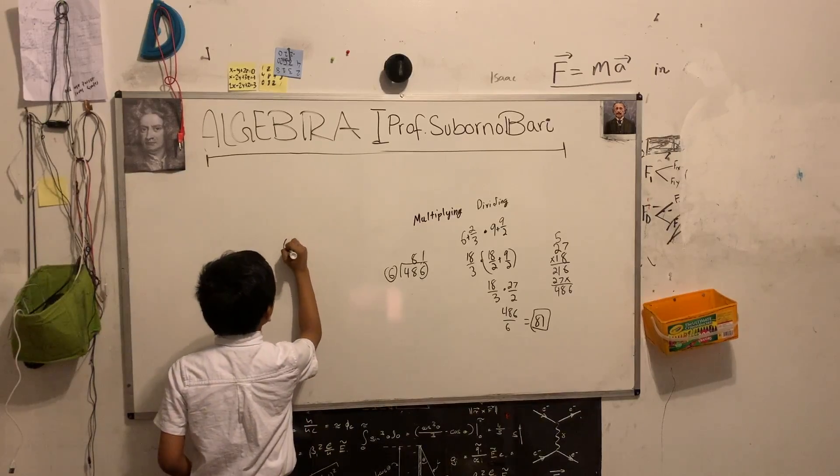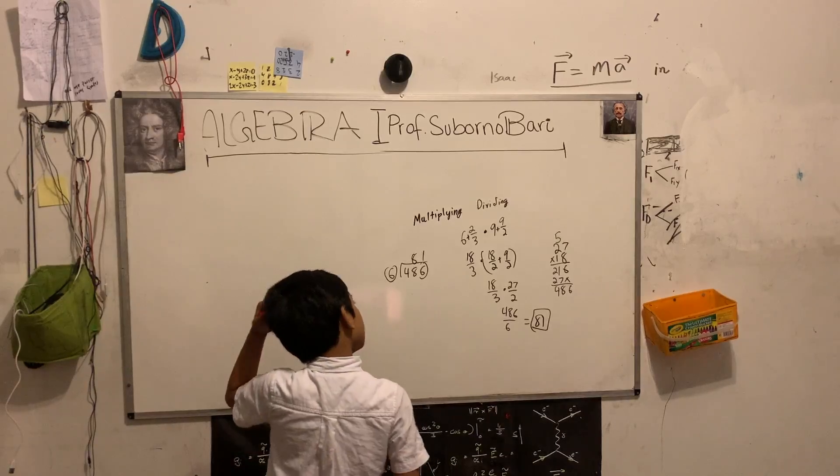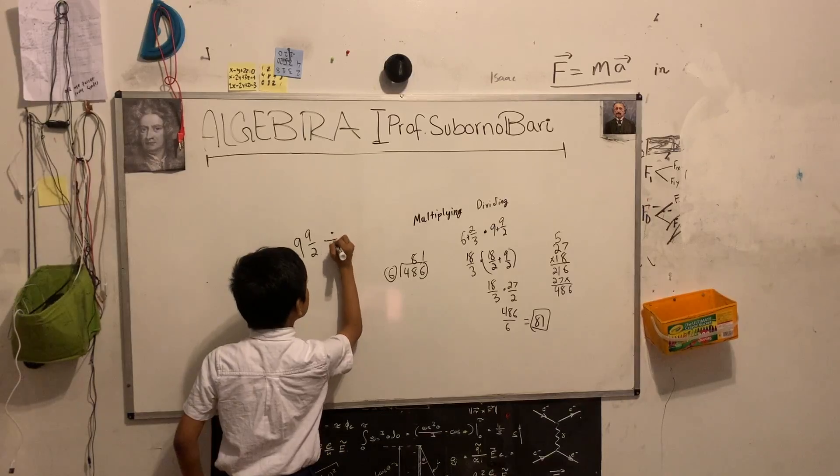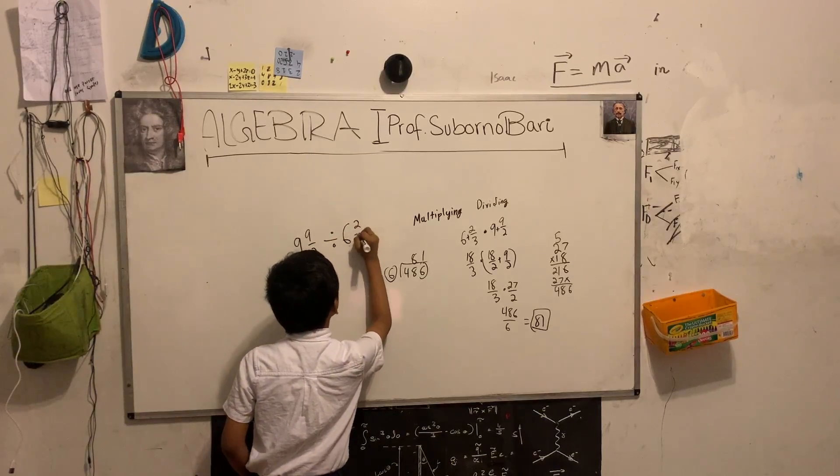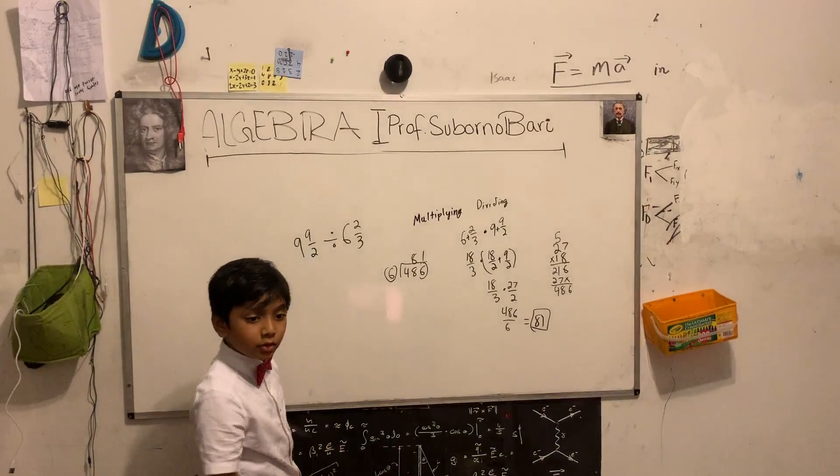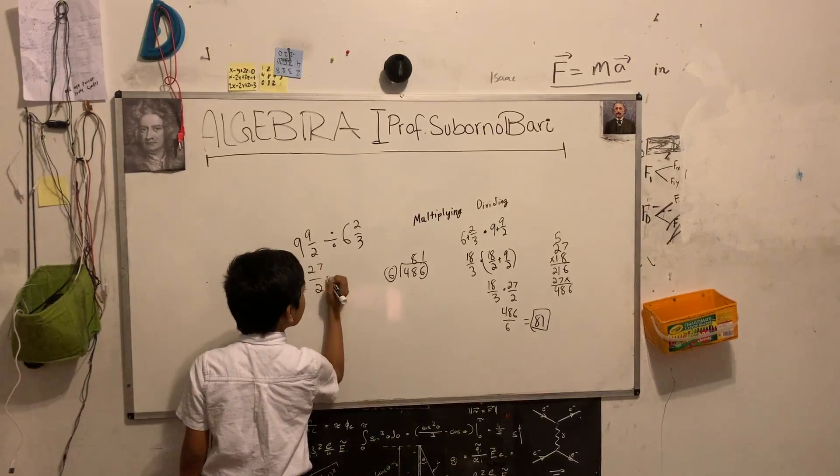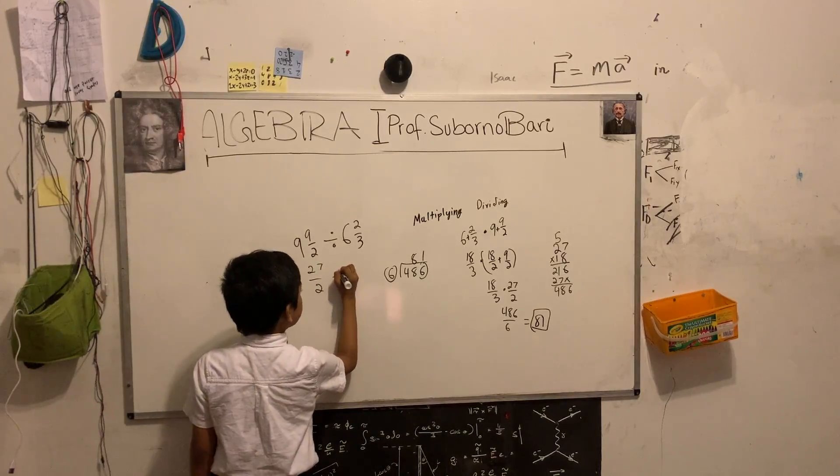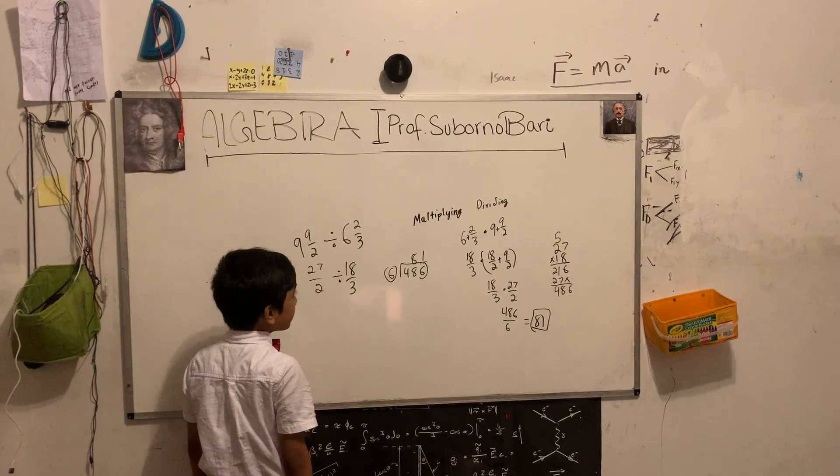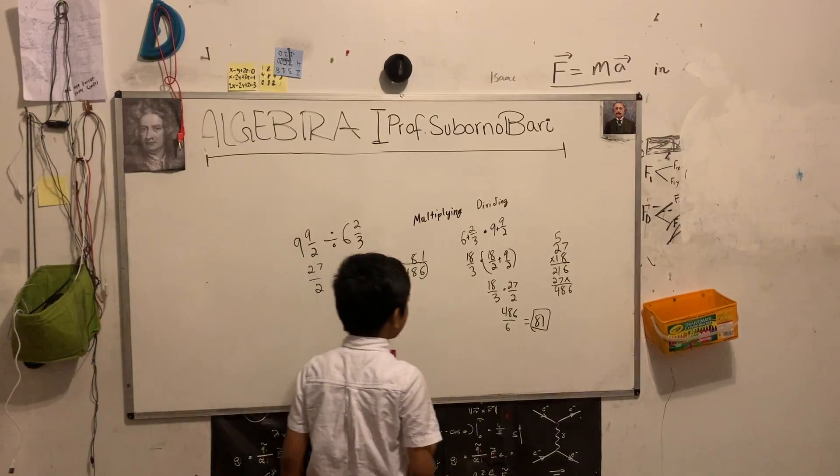Now, we're going to try dividing 9 1/2 by 6 2/3. Now, we know the concept of mixed numbers from a while ago. So, we can boom and then boom. Now, if you don't know this trick, it is very...wait, wait, wait. This is 20/3.